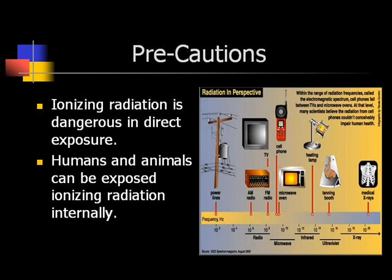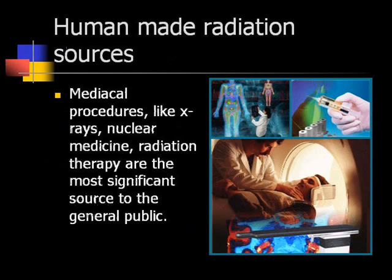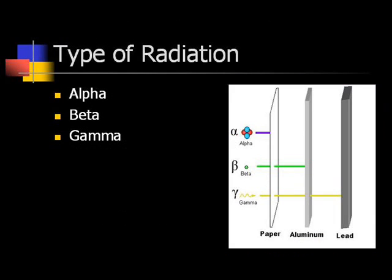Precautions. Ionizing radiation is dangerous in direct exposure. Humans and animals can be exposed to ionizing radiation internally. Human-made radiation sources include medical procedures like x-rays, nuclear medicine, and radiation therapy, which are the most significant sources of radiation exposure to the general public.